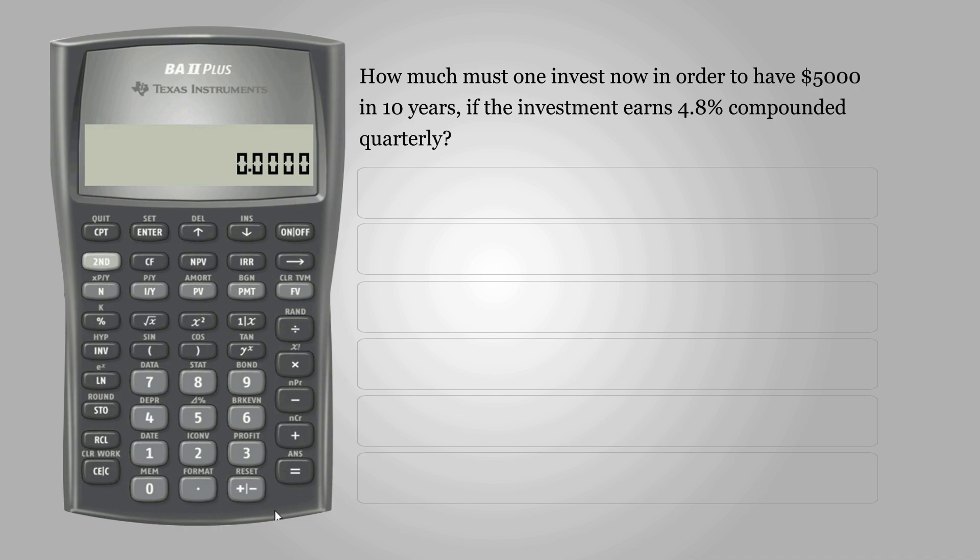First we need to set all variables to defaults, so press 2nd and FV to clear TVM or time value of money.